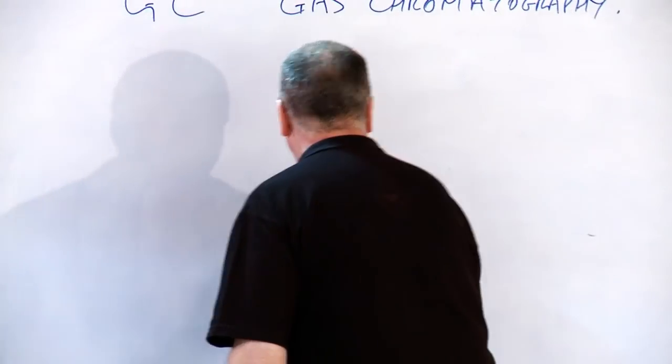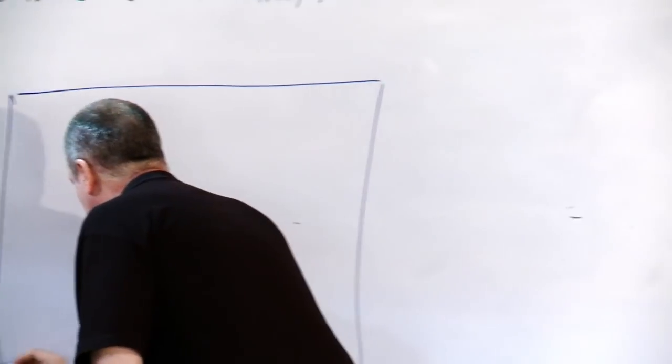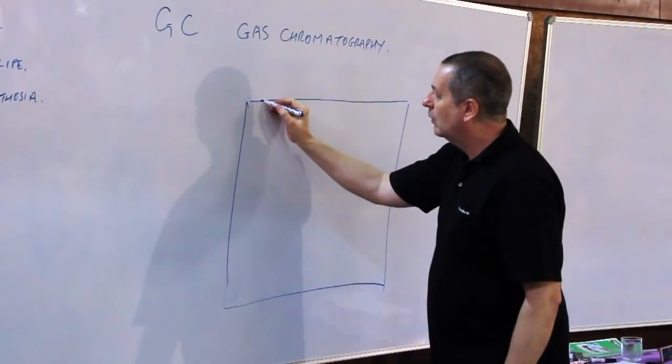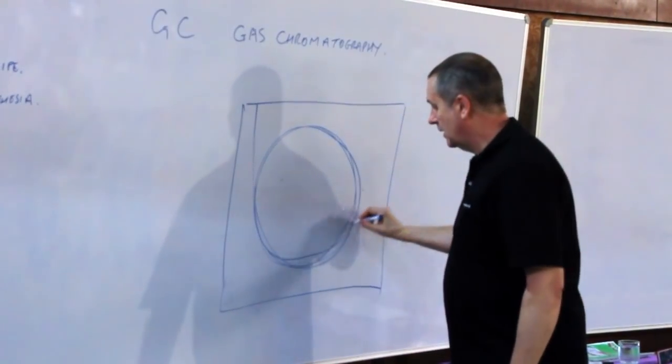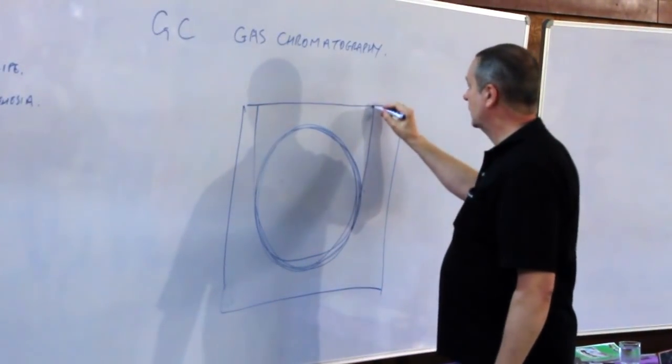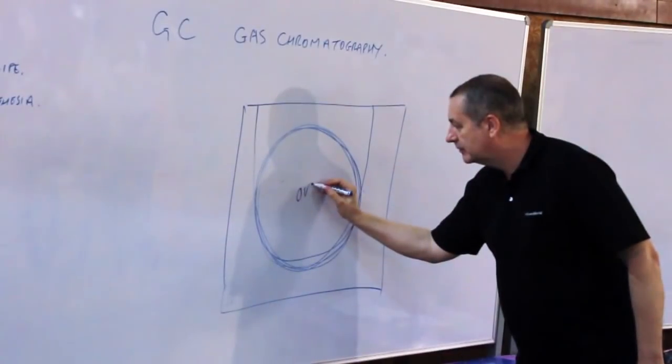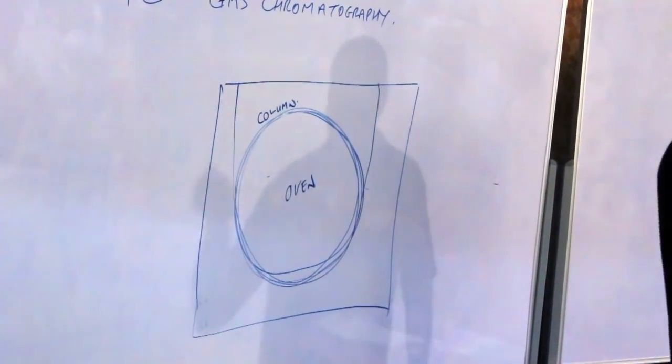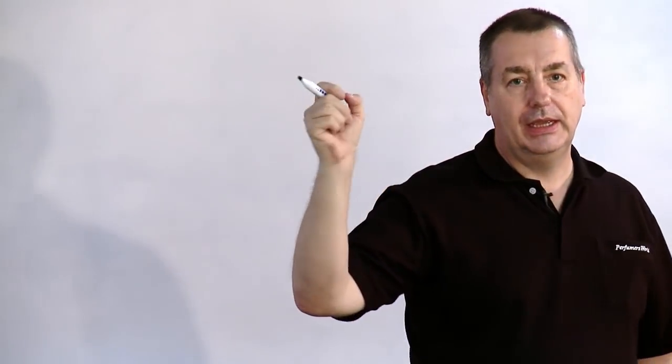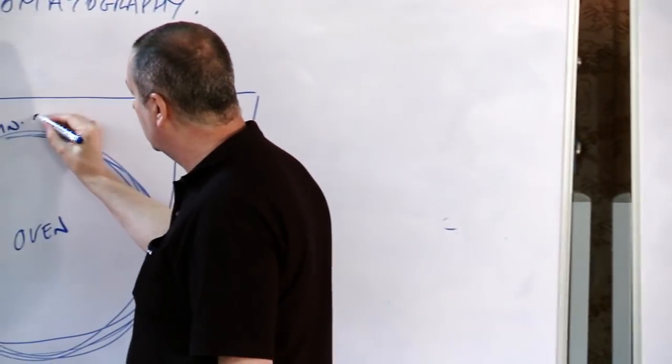Gas chromatography is simply a method of separating a mixture. It's a machine, an oven with a long coil in it. So that's an oven, the coil is called the column and the column is not much thicker than a human hair. But it's a tube about 30 metres long.